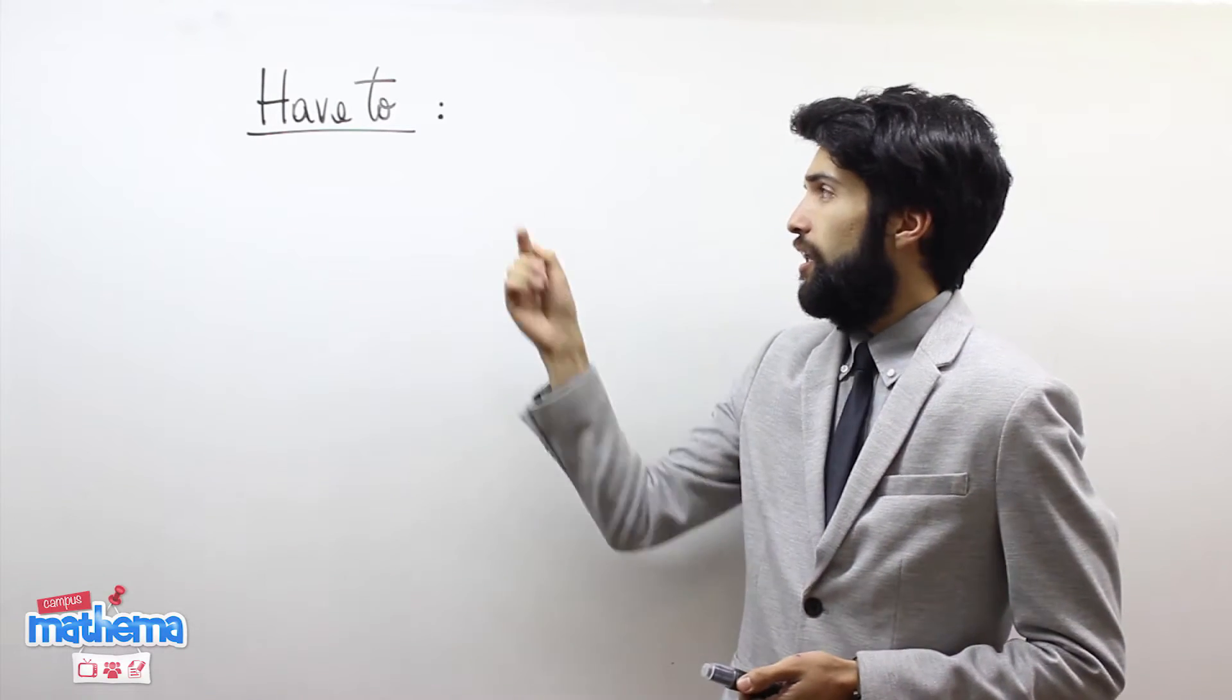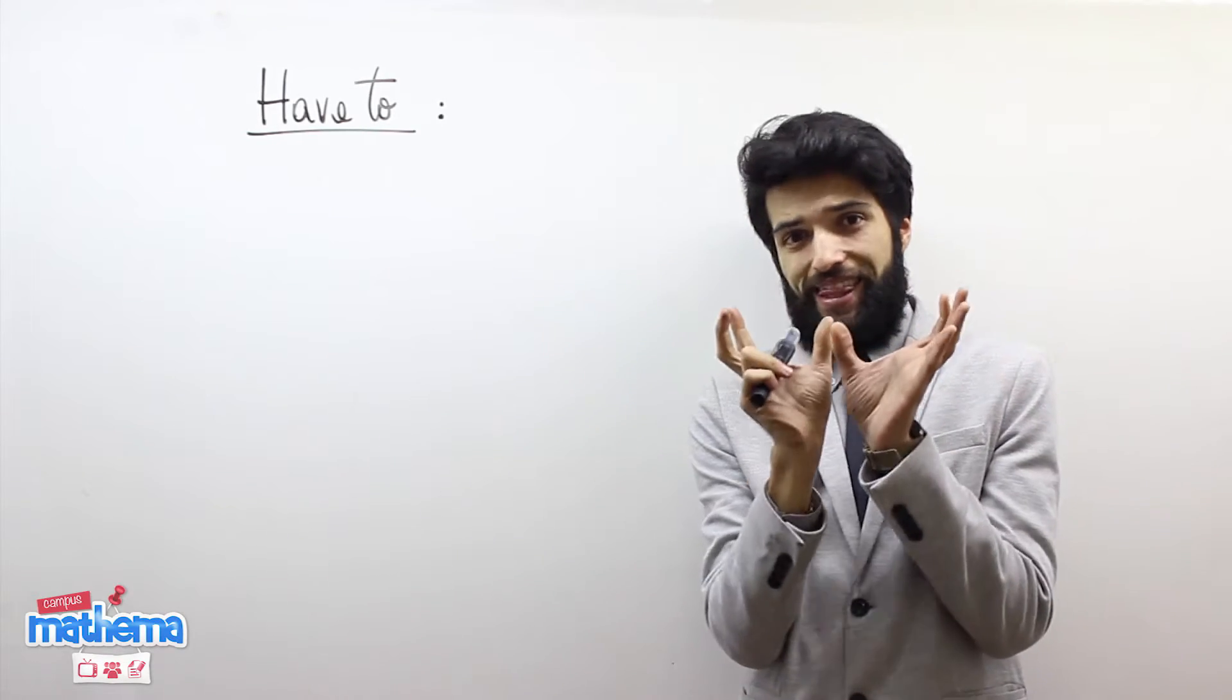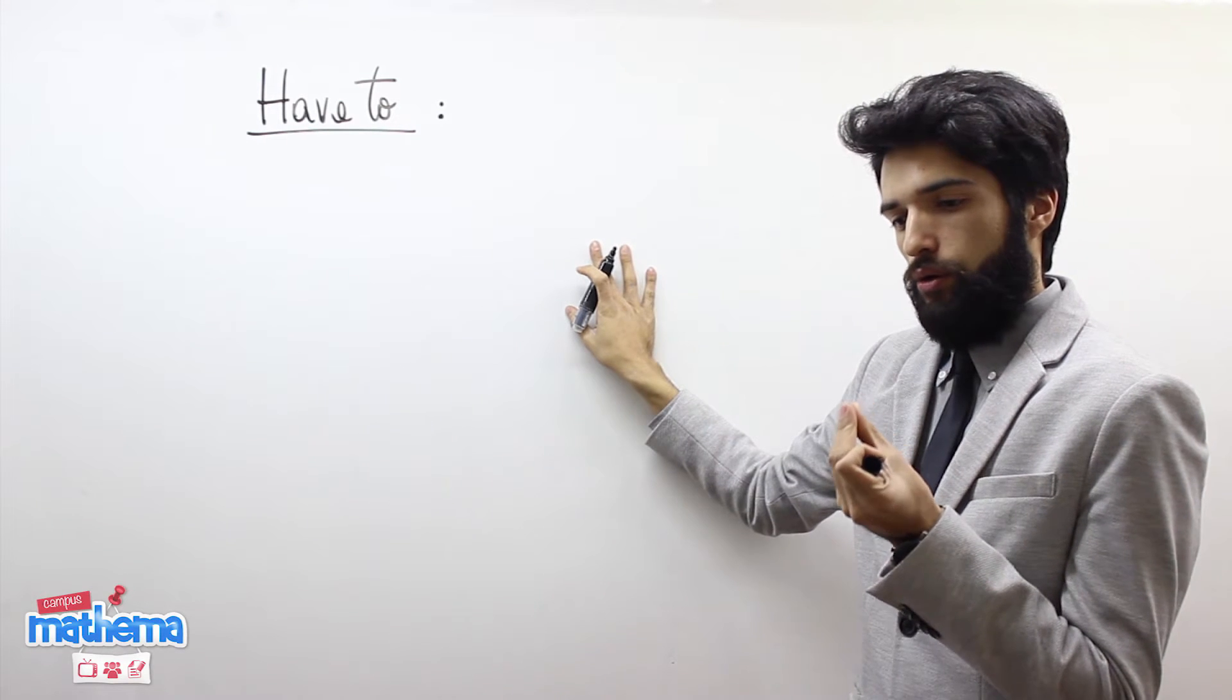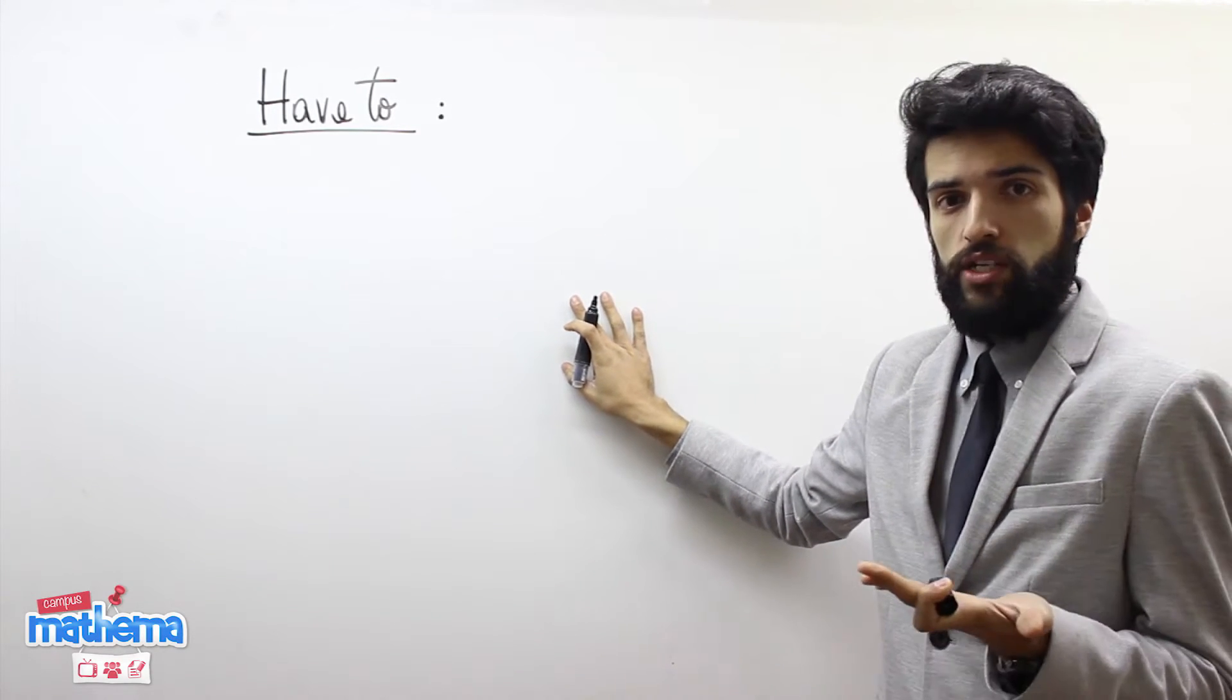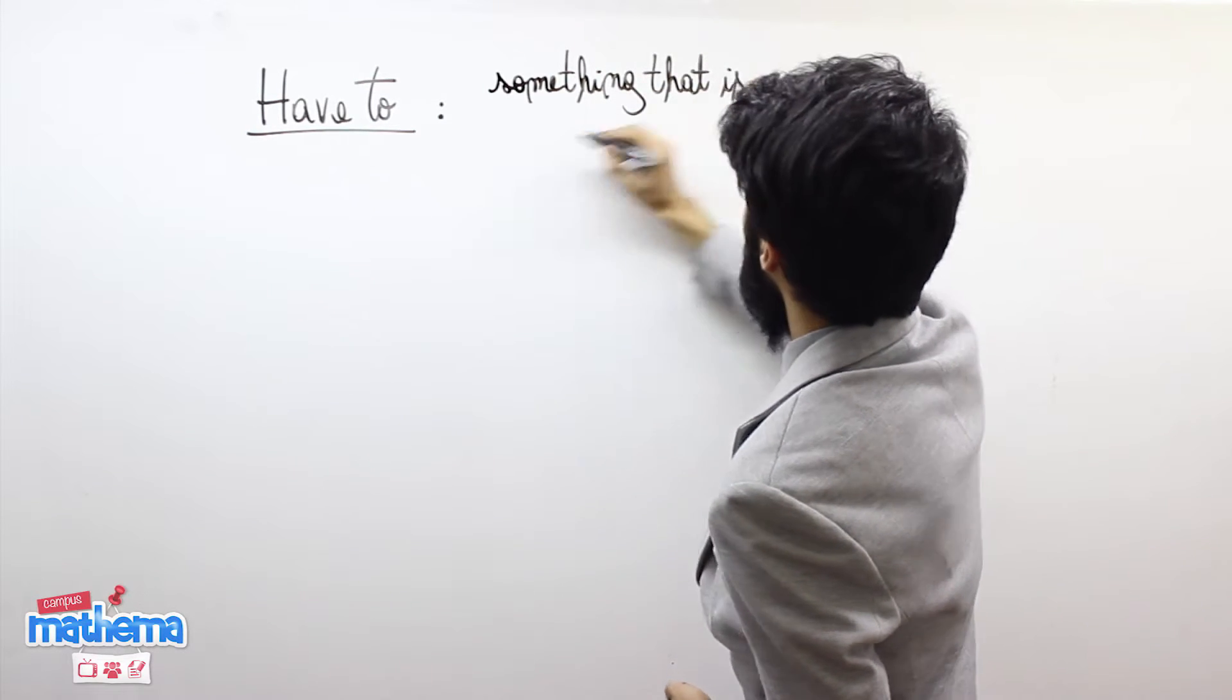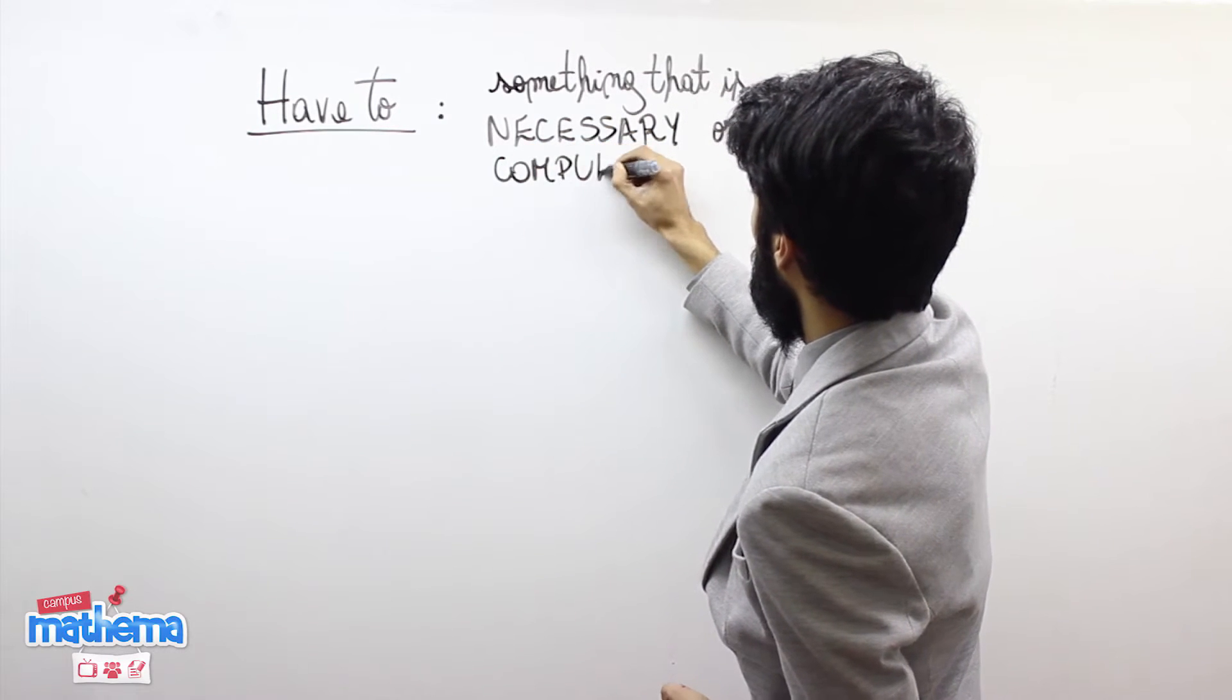What is the meaning of have to in Spanish? In Spanish it means debo hacer algo. Yo debo, o tú debes, o él o ella debe hacer algo, o debe levantarse. Para ese debo ocupamos have to. We use it when we want to say something that we must do, that is really necessary or something that is obligatory.